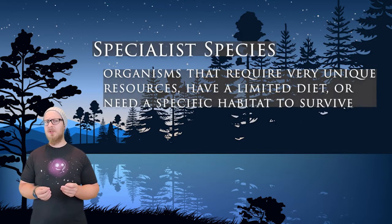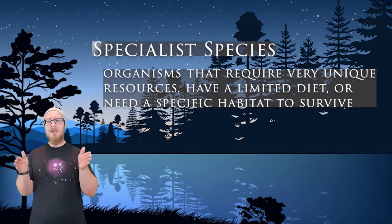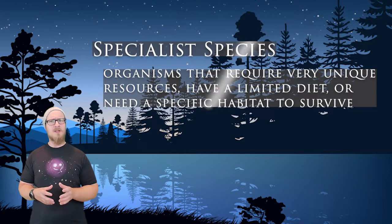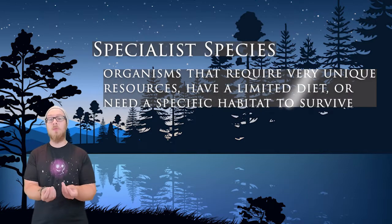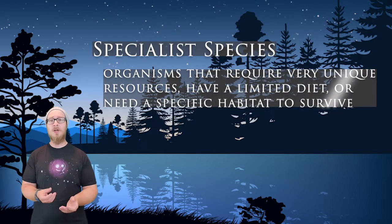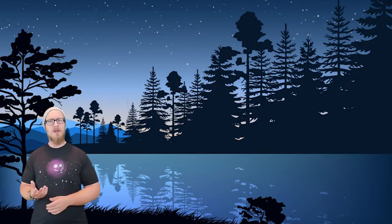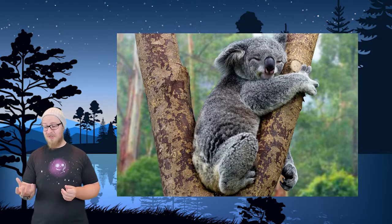A specialist species is a species with a very narrow ecological tolerance curve. These are organisms that require very unique resources, have a very limited diet, or need a specific habitat to survive. An example of a specialist species is the koala, which is adapted to survive exclusively on eucalyptus leaf — in any other habitat, a koala would not survive.